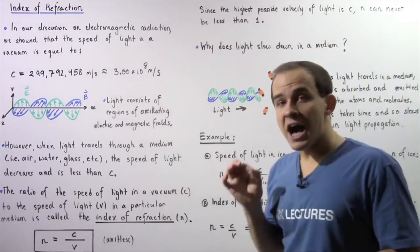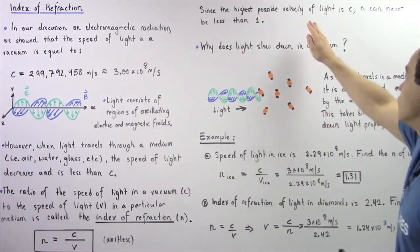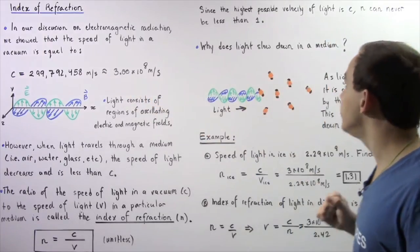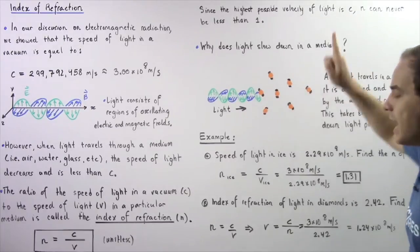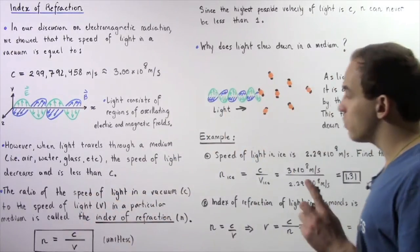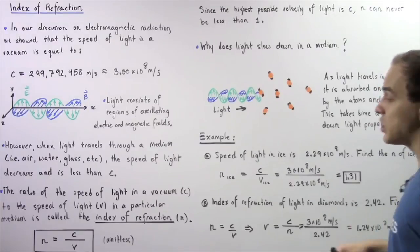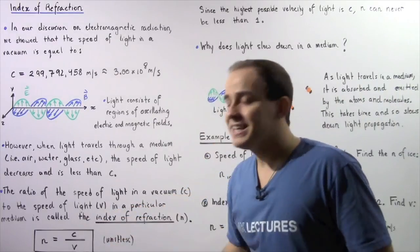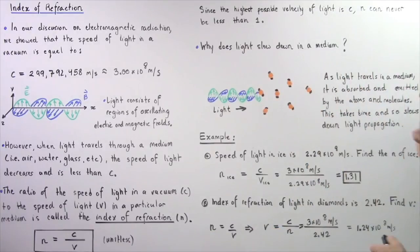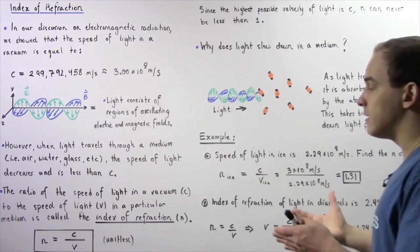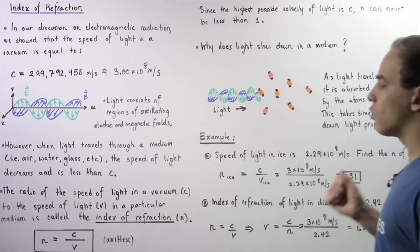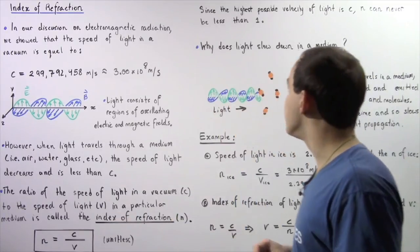Because the highest possible value for the speed of light is c, and c appears on the top of this ratio, that means this ratio can never be less than one. So the index of refraction of any material or medium is always greater than one.